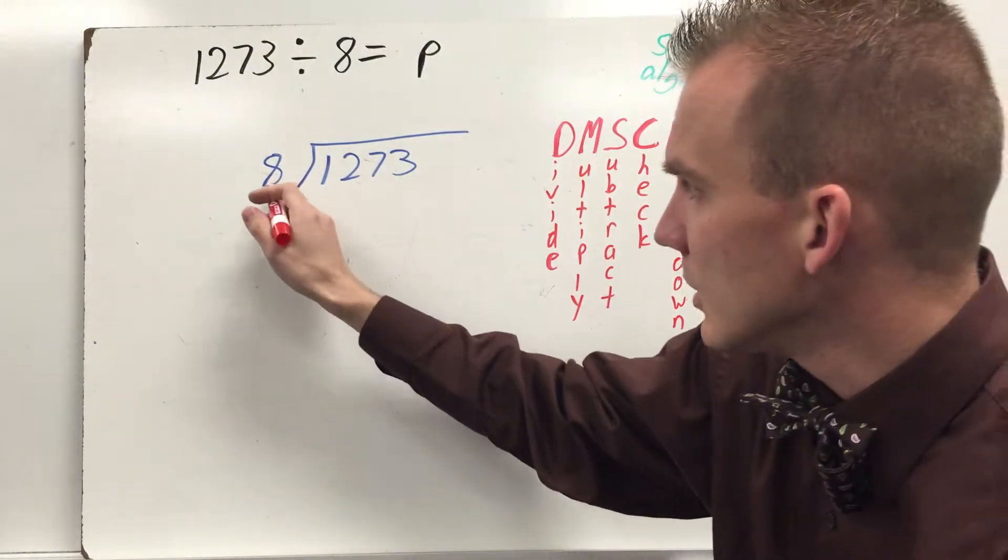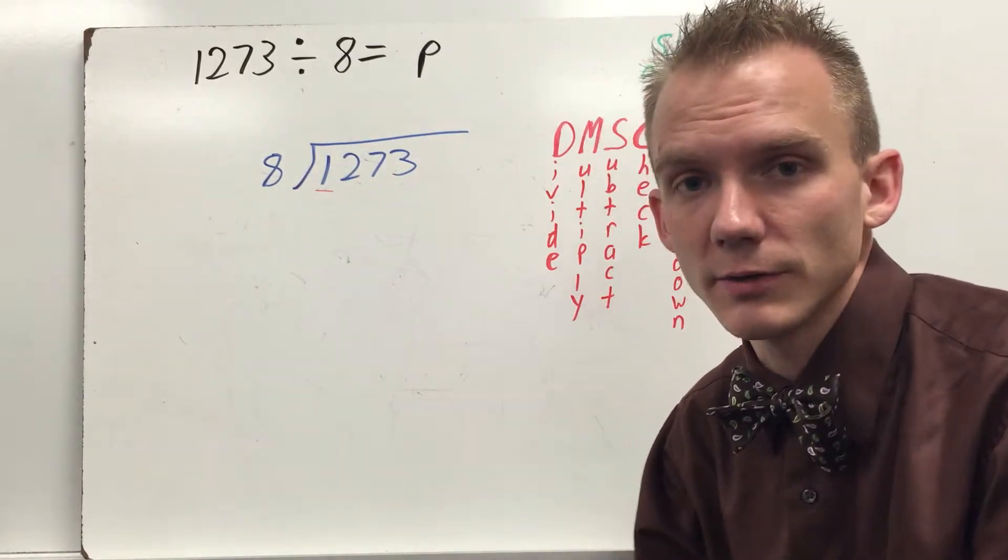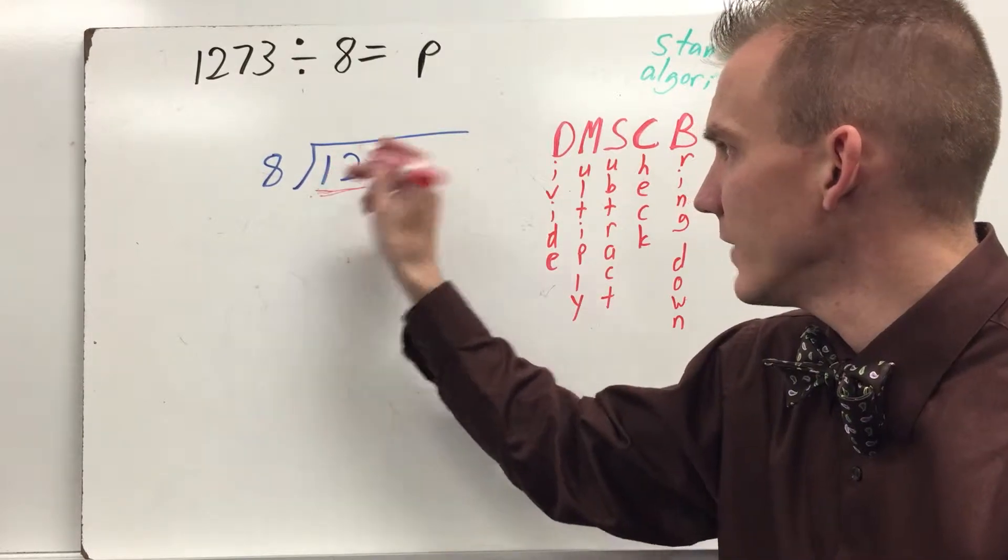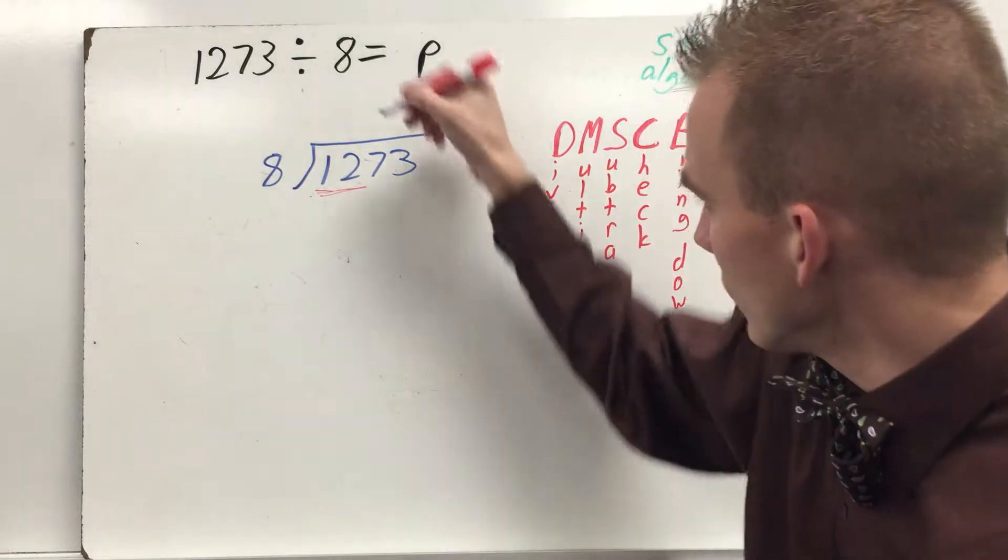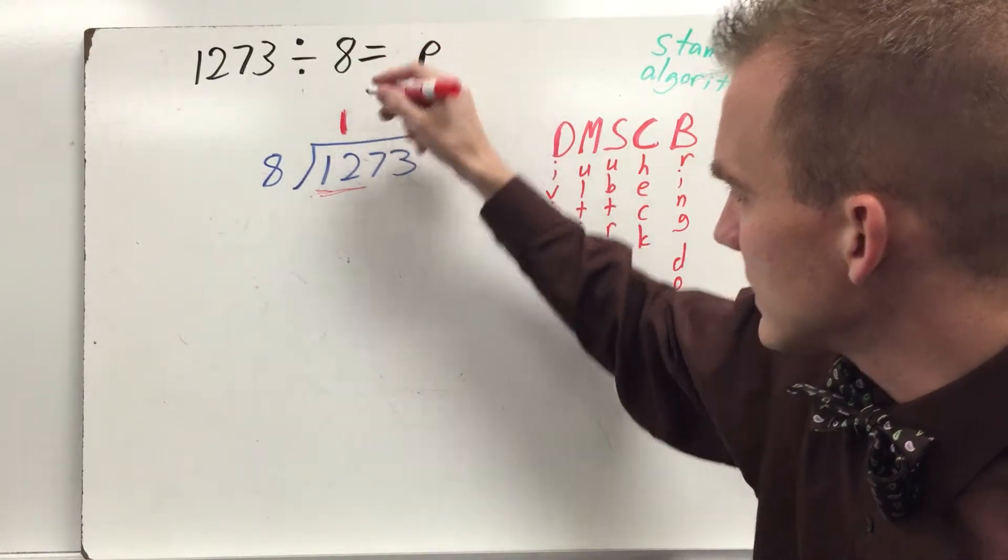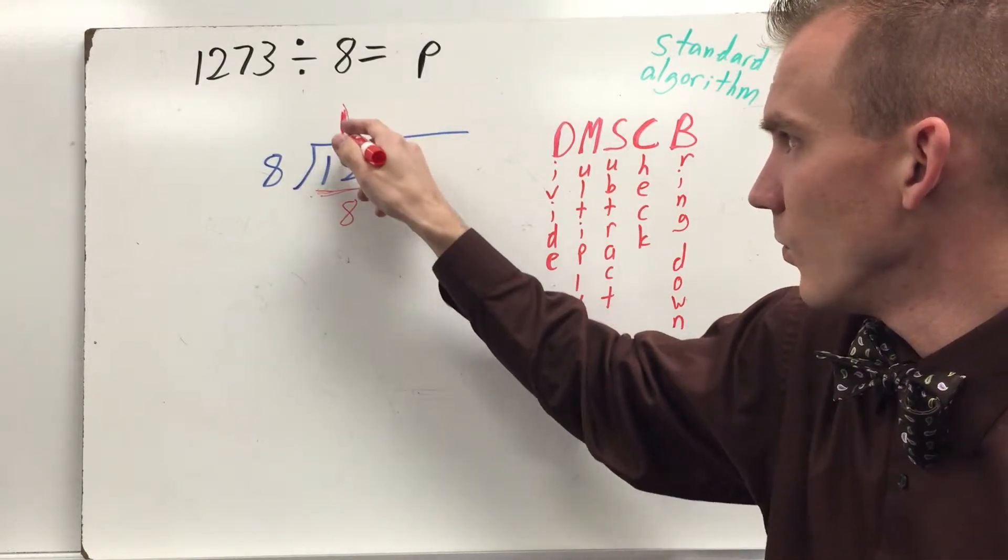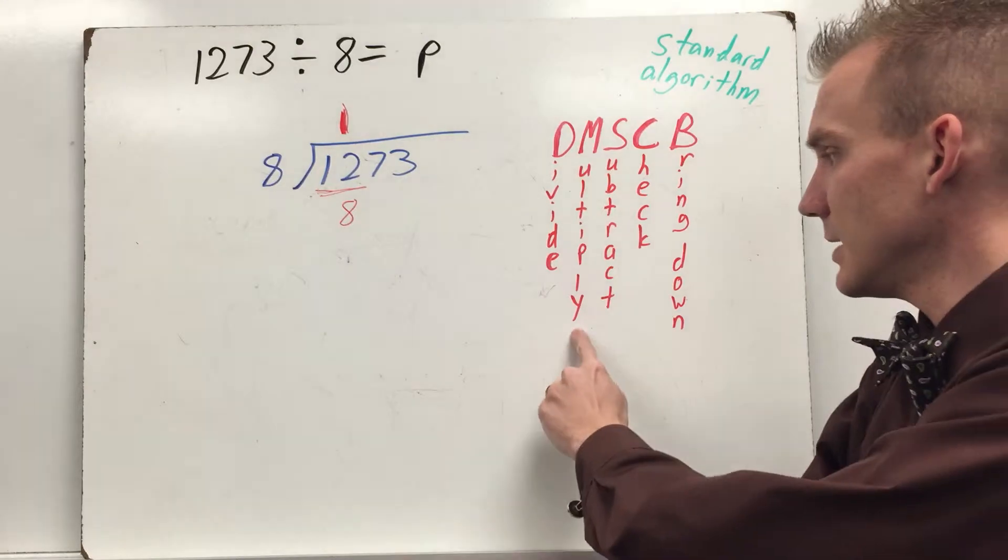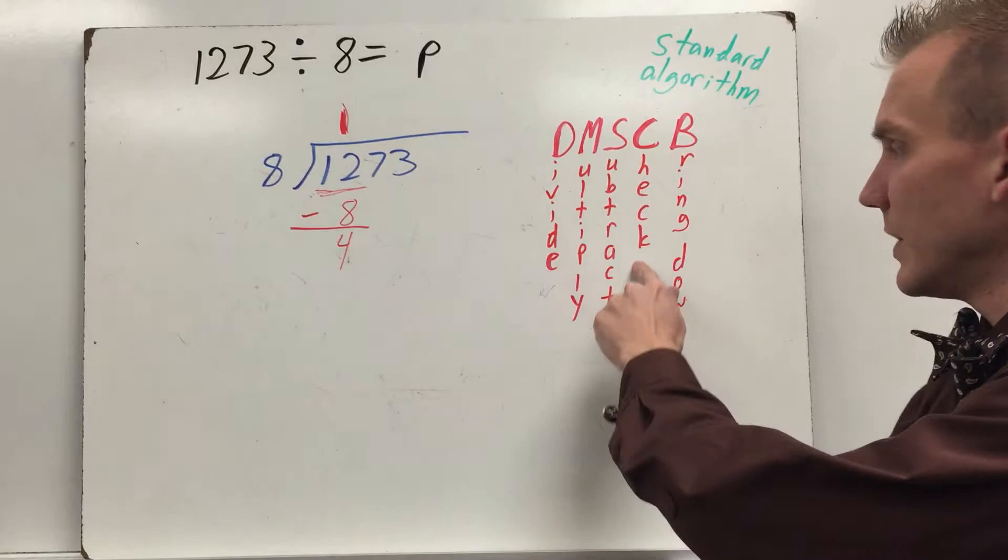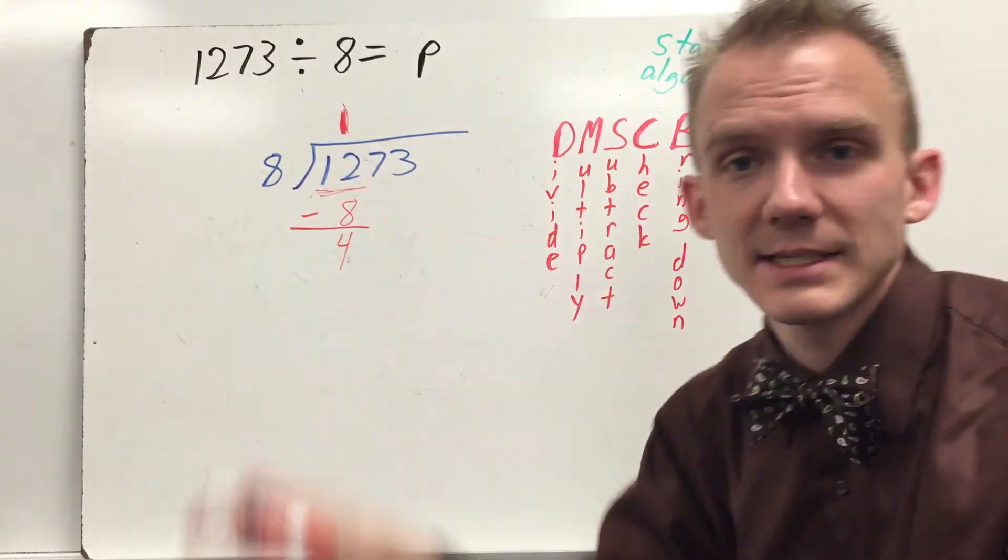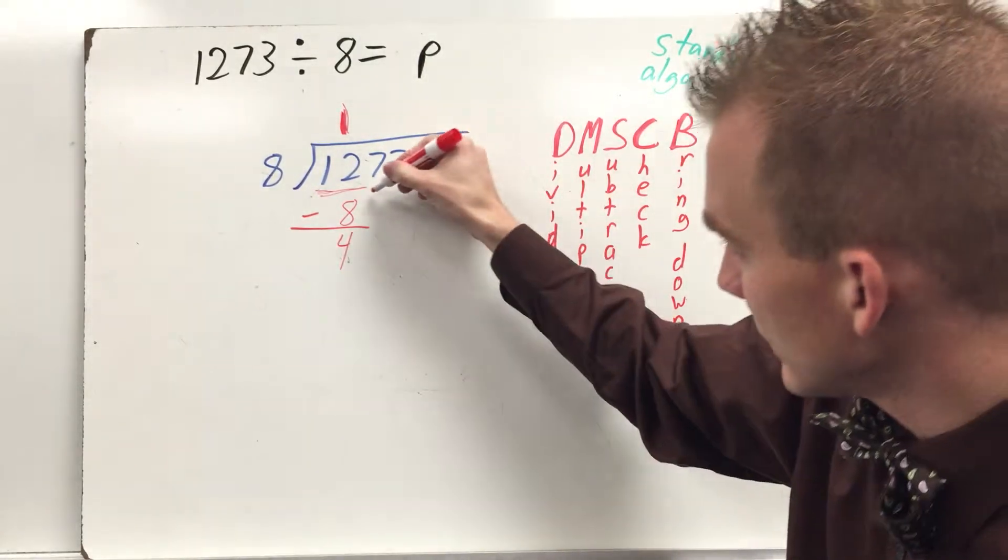Does. Divide. That's my first step. You're always just going to start here. 8 going into the highest place value. 8 can't divide into 1. 1 is smaller than 8. So we're going to keep going up to the 12. 8 divided into 12. It goes in at least once. So I know it's going to go in once. 1 times 8 is 8. So I've divided. 8 goes in one time. Now I multiply. 1 times 8 is 8. Now I subtract 12 minus 8. 12 minus 8 is 4. And now I'm at check. Is 4 less than 8? The answer is yes. So now I'm ready to bring down. And I bring down this 7.